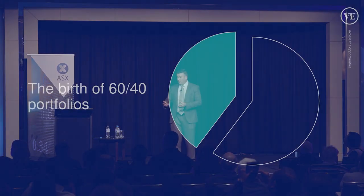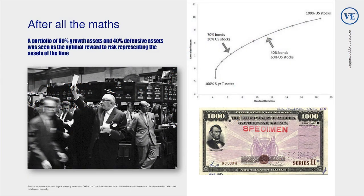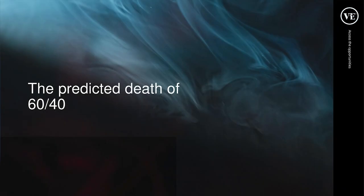After all this maths, trust the world of finance to put it to work — this is really what underpinned the birth of the 60-40 portfolio. It started to be applied to different asset classes and indices. At the time you had two asset classes: US stocks and US bonds. When looking at the efficient frontier to get a moderate level of volatility — around that 10 to 12% per annum mark — the maths spat out that you should own 60% in stocks and 40% in bonds.